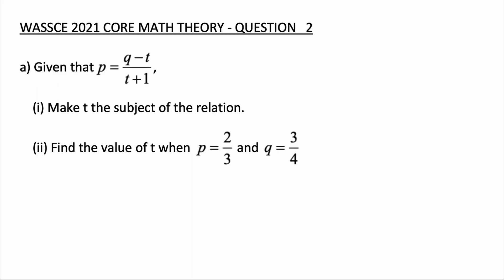Hi guys, welcome to Sabondi Academy. In today's video we'll be solving Question 2 of the 2021 WASSCE math theory questions. We'll begin with Question 2a: given that p is equal to (k minus t) all over (t plus 1), make t the subject of the relation, then find the value of t when p is equal to 2/3 and k is equal to 3/4.